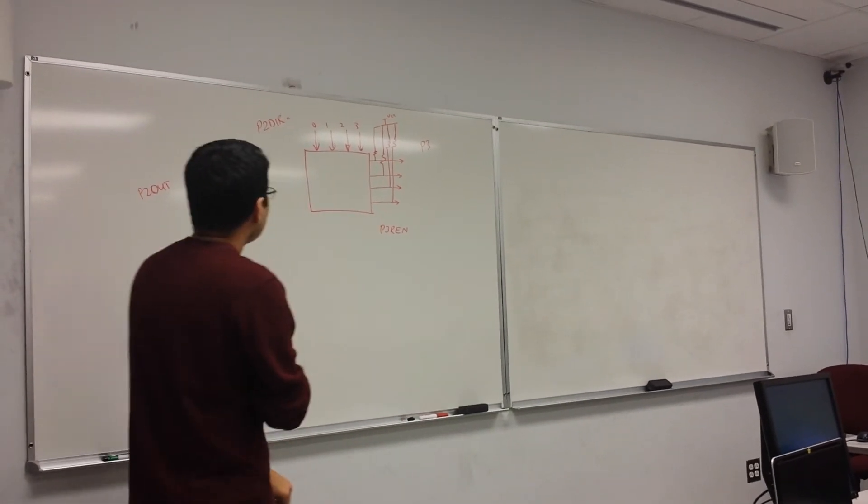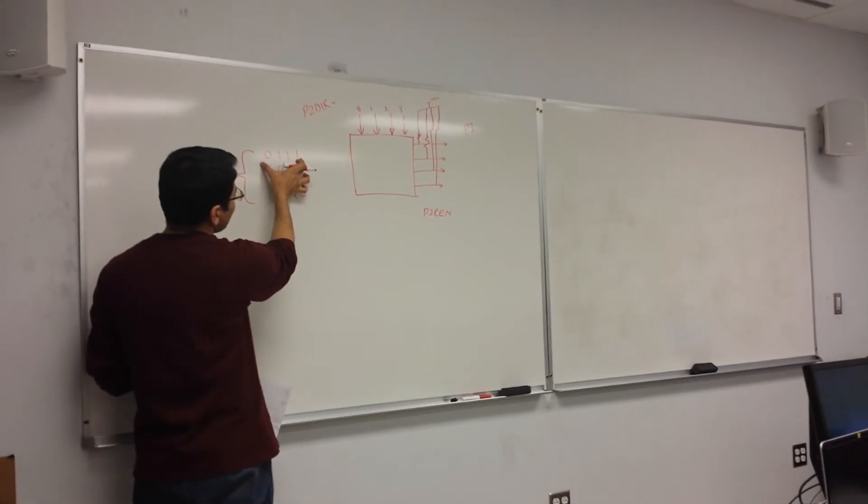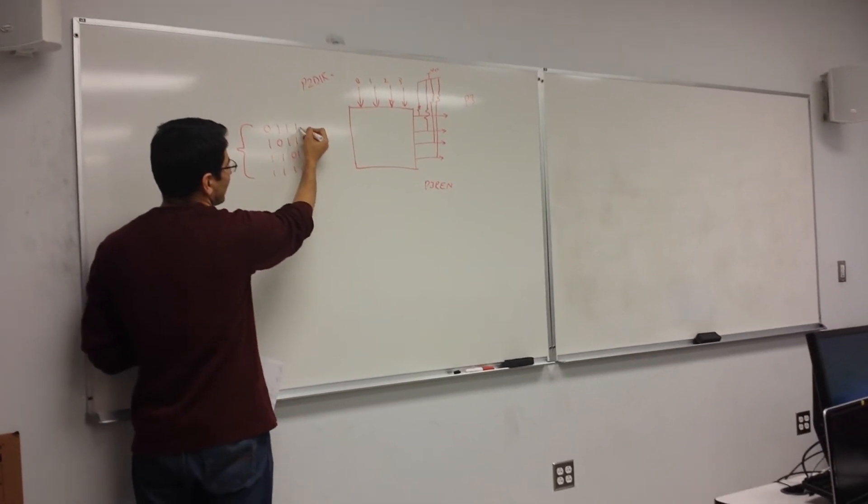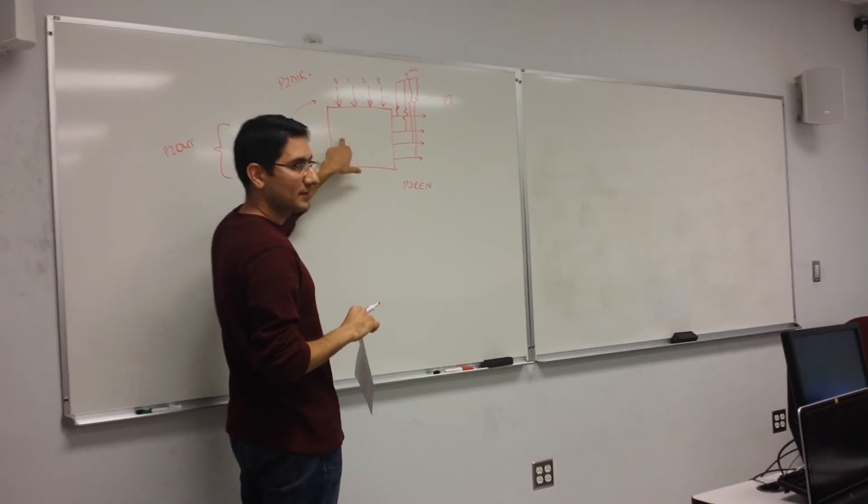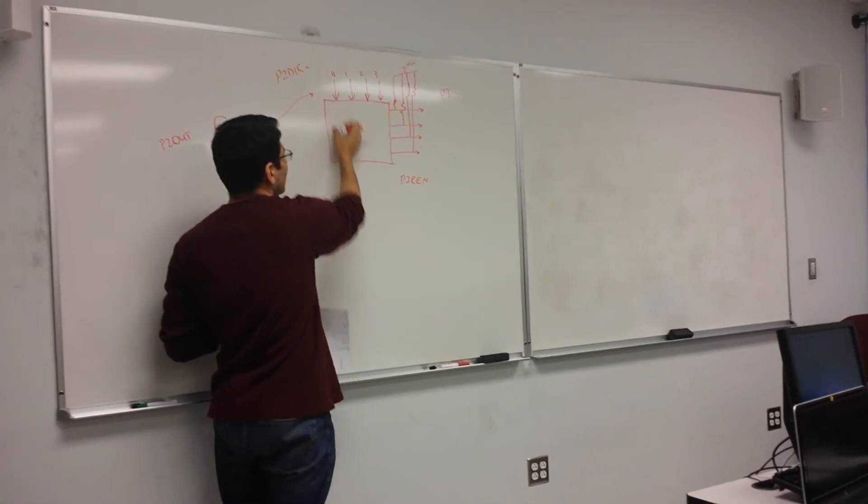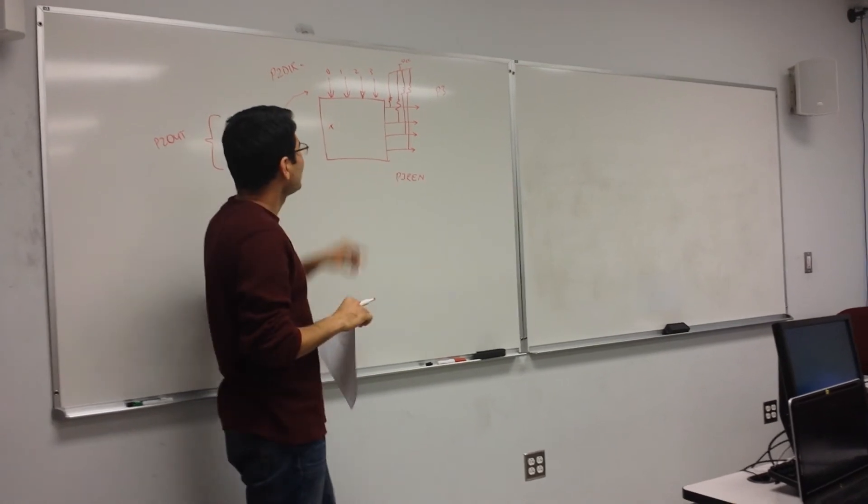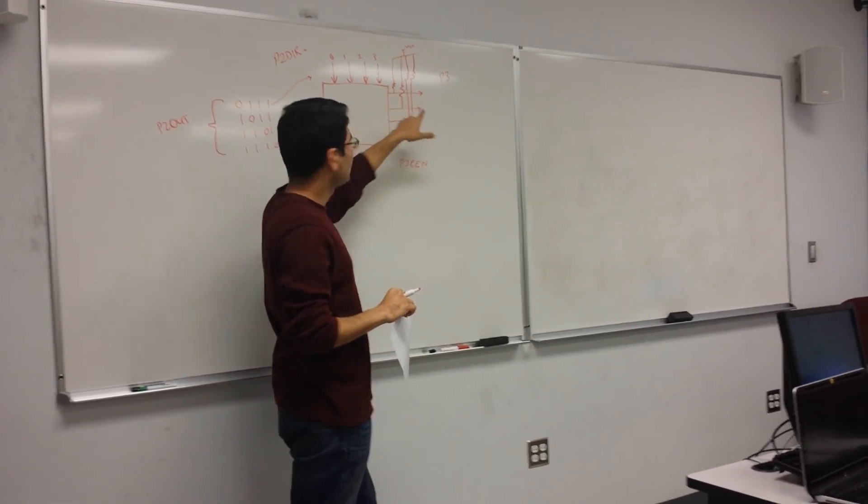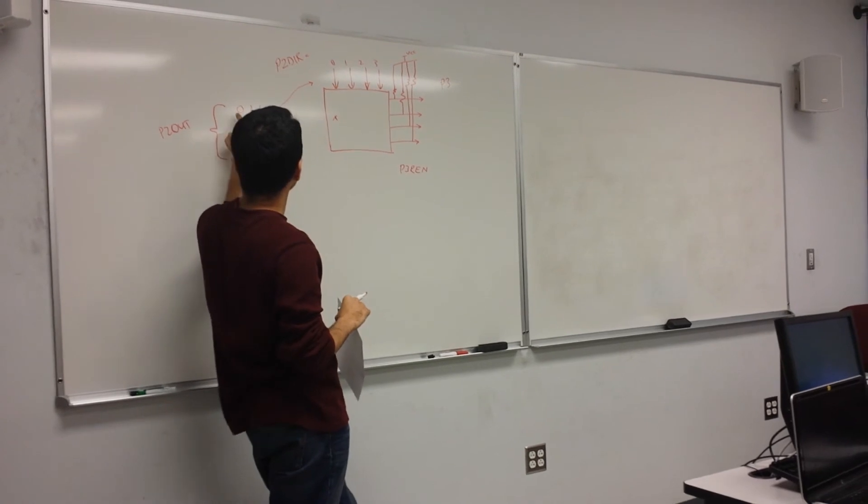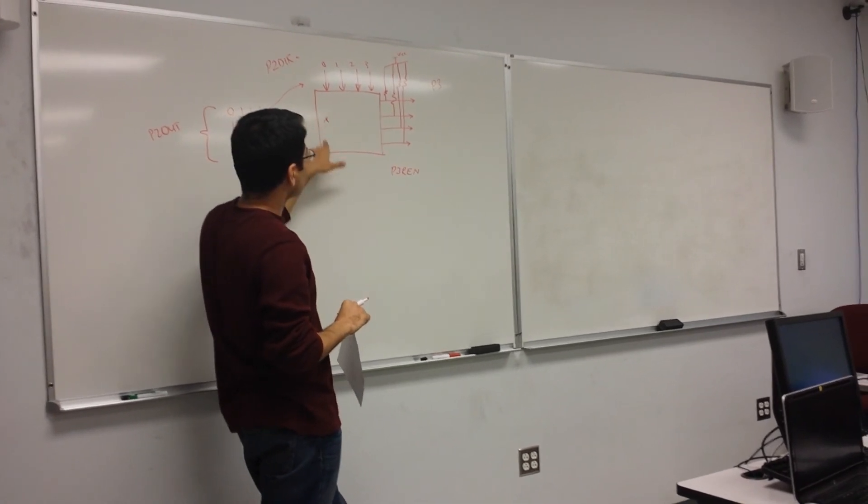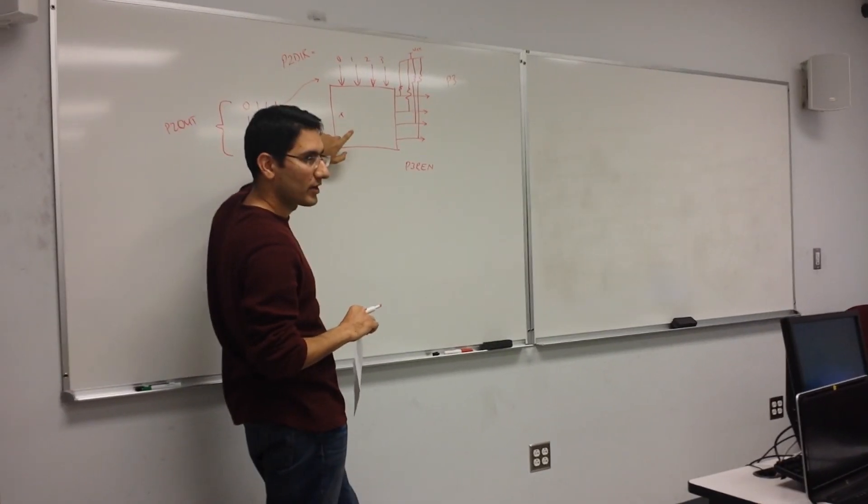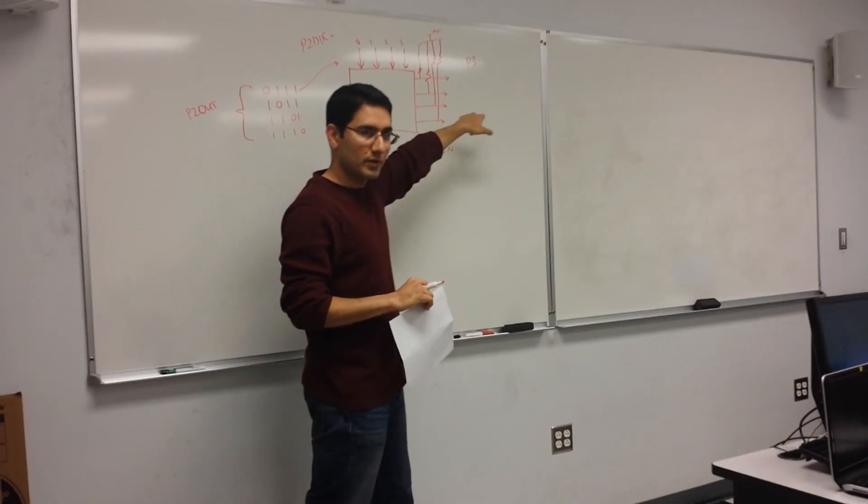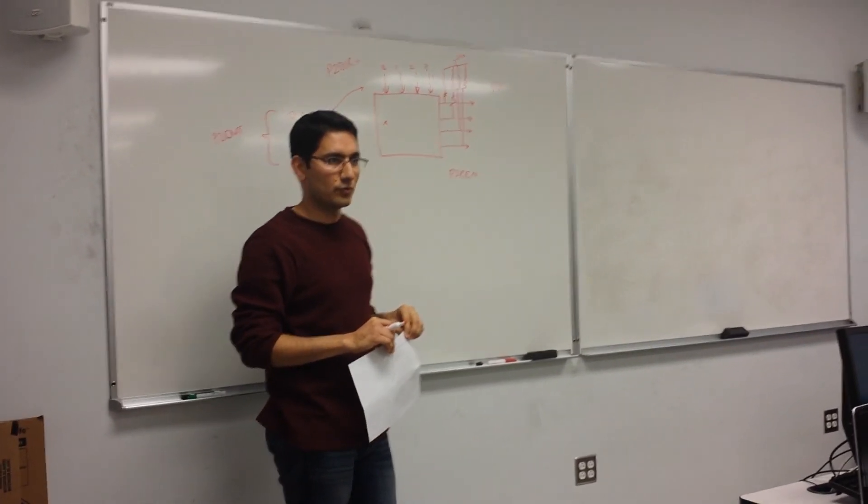What happens is that when we apply this vector, for instance, here, so it means any button that is pressed in this column, it will be connected to 0. Because we apply 0 here. So any button here in this column, any 1, 2, 3, 4, that will send a 0 there to the interrupt service routine.